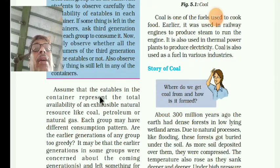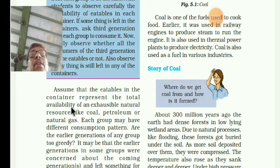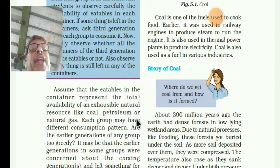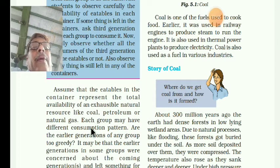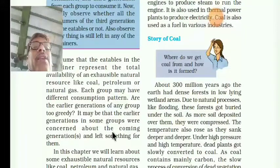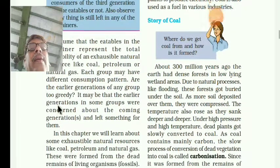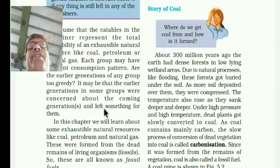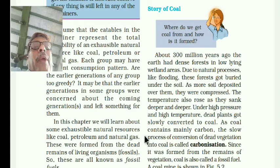Assume that these eatable containers represent the total availability of exhaustible natural resources — after using them it will get over, like coal, petroleum, or natural gas. Each group may have a different consumption pattern. If earlier generations used more, the next generation will not get enough. So in this chapter we learn about exhaustible natural resources like coal, petroleum, and natural gas.